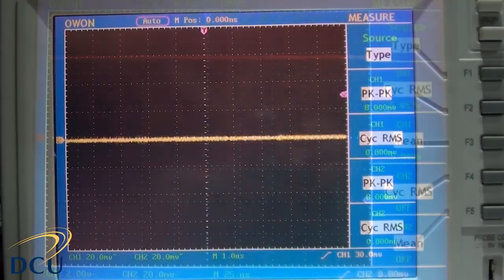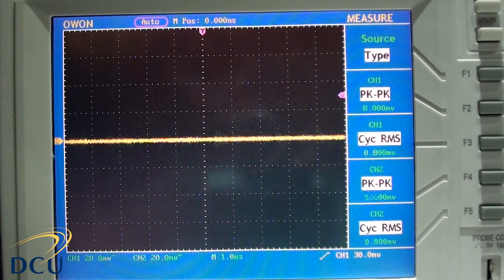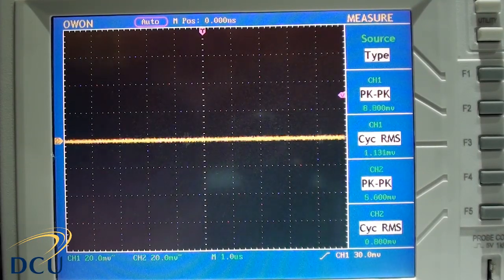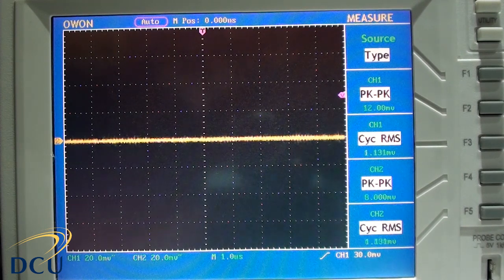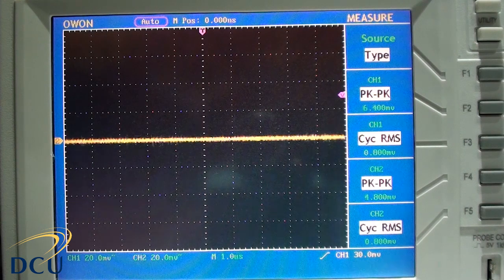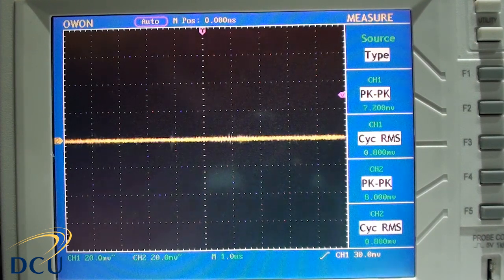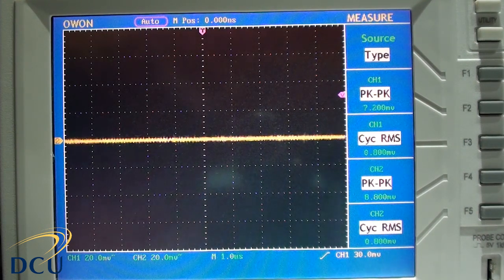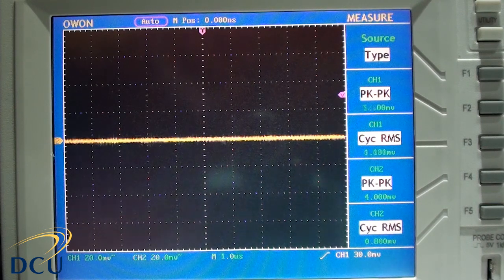In this case now we're going to AC couple the same signal so it's centered around zero on the y-axis. This allows us to measure the peak to peak voltage which is the difference between the highest and lowest levels of voltage within the signal. In this case we can see that the peak to peak voltage is 7.2 millivolts.